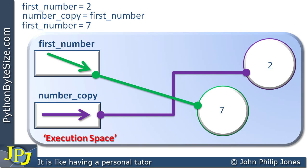What we can see now is that we have two objects in the computer's memory. First_number is pointing to the object that has 7. It was pointing to the object that contained 2 right at the very beginning of the small program we're looking at here, but it no longer does. It points to a completely different object now.